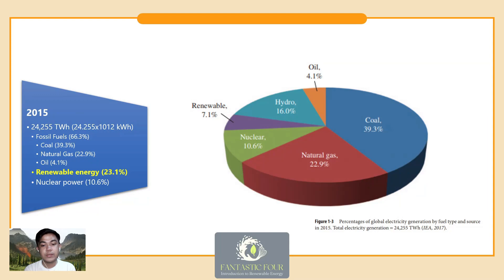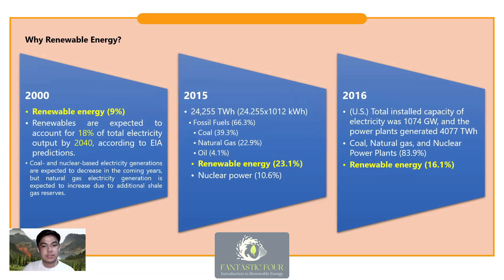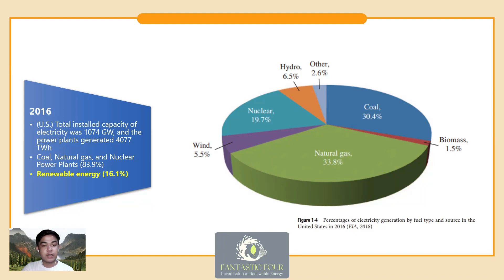This shows percentages of global electricity generation in 2015. In 2016, the total installed capacity of electricity in the United States was 1,074 gigawatts, and US power plants generated 4,077 terawatt-hours of electricity. Approximately 83.9 percent was generated by coal, natural gas, and nuclear power plants. The remaining 16.1 percent was generated mostly by renewable sources including hydro and wind, with the rest from biomass, solar, and geothermal.